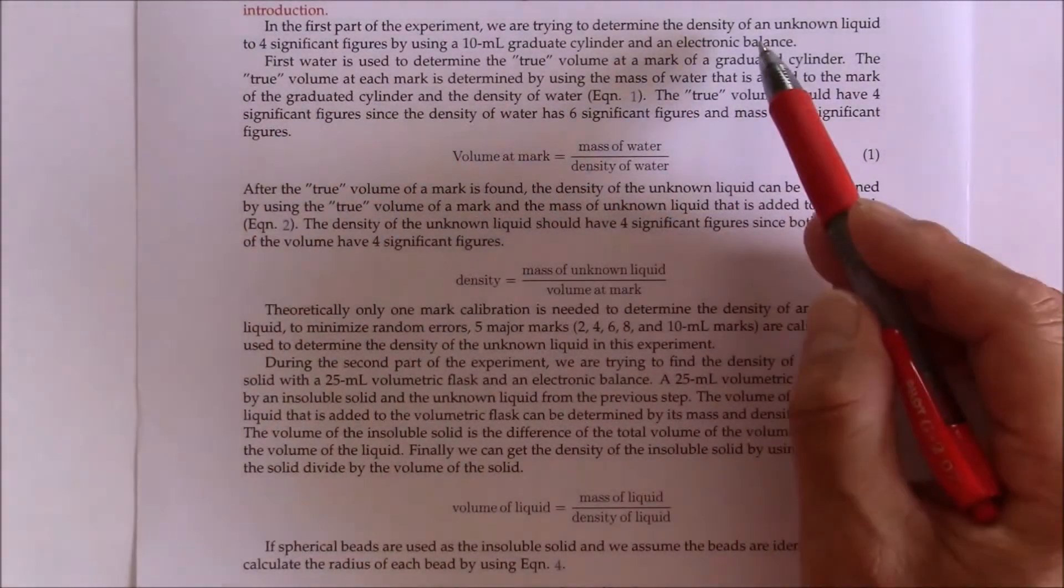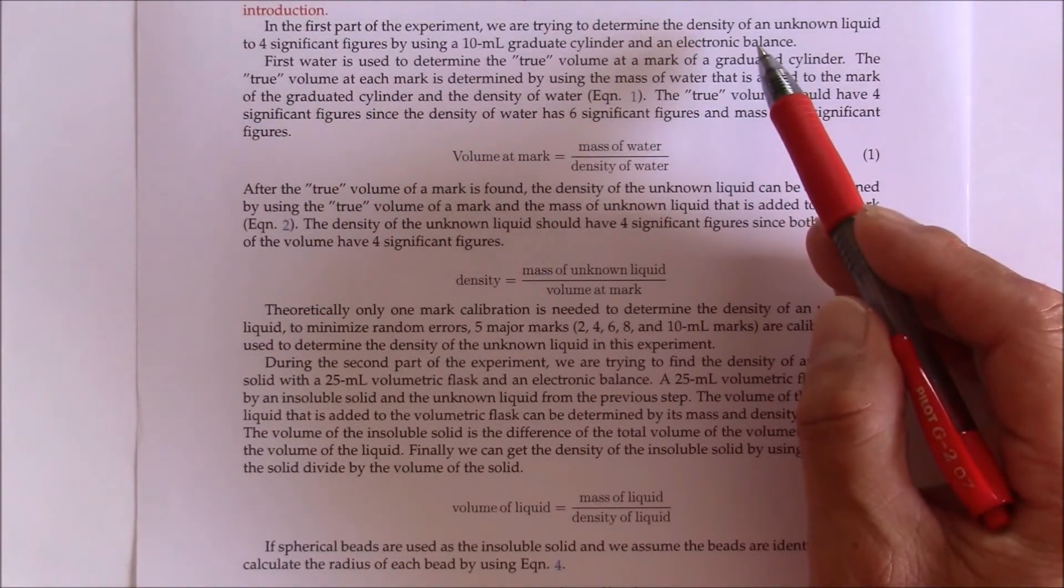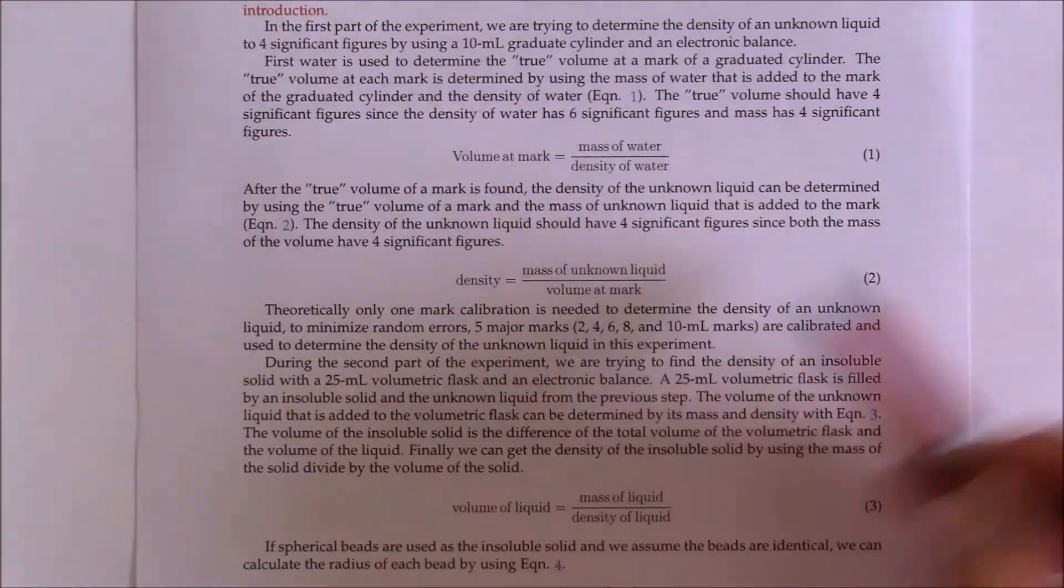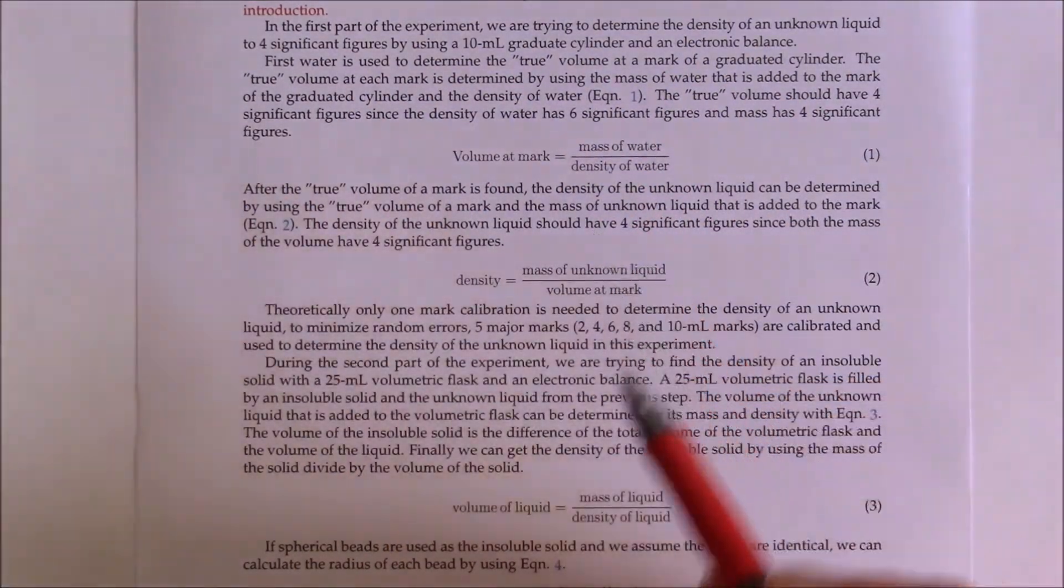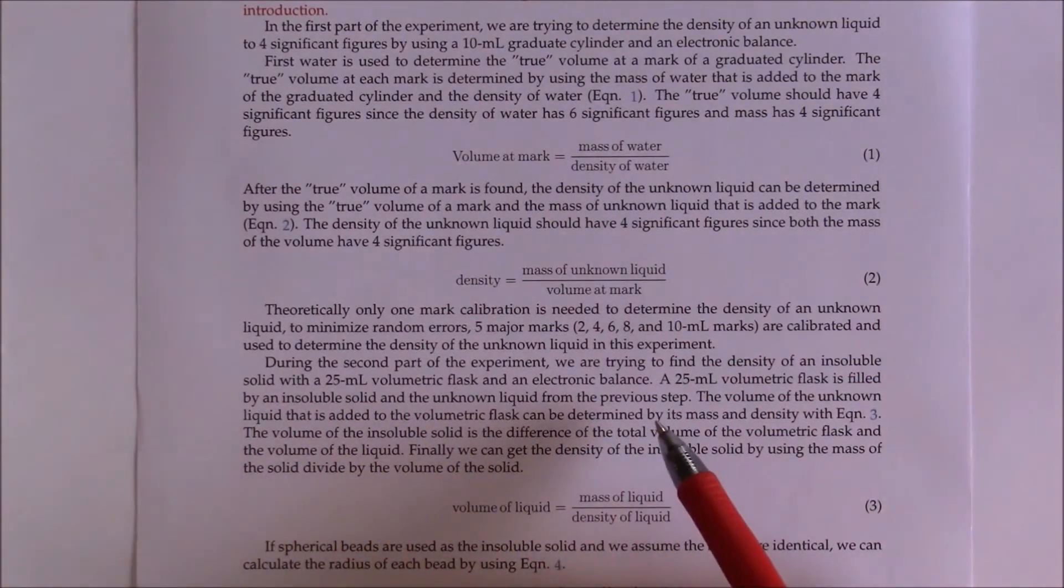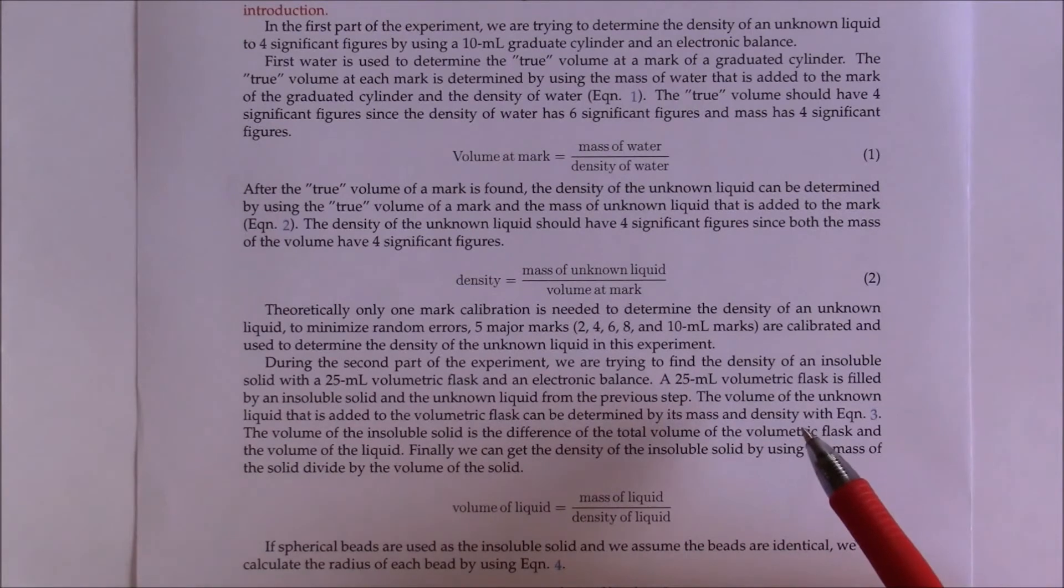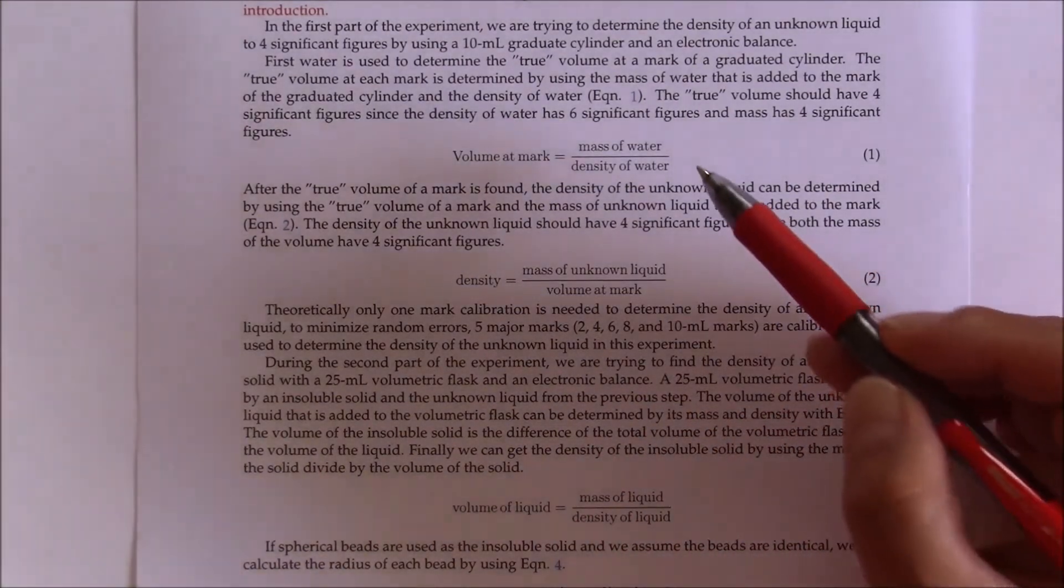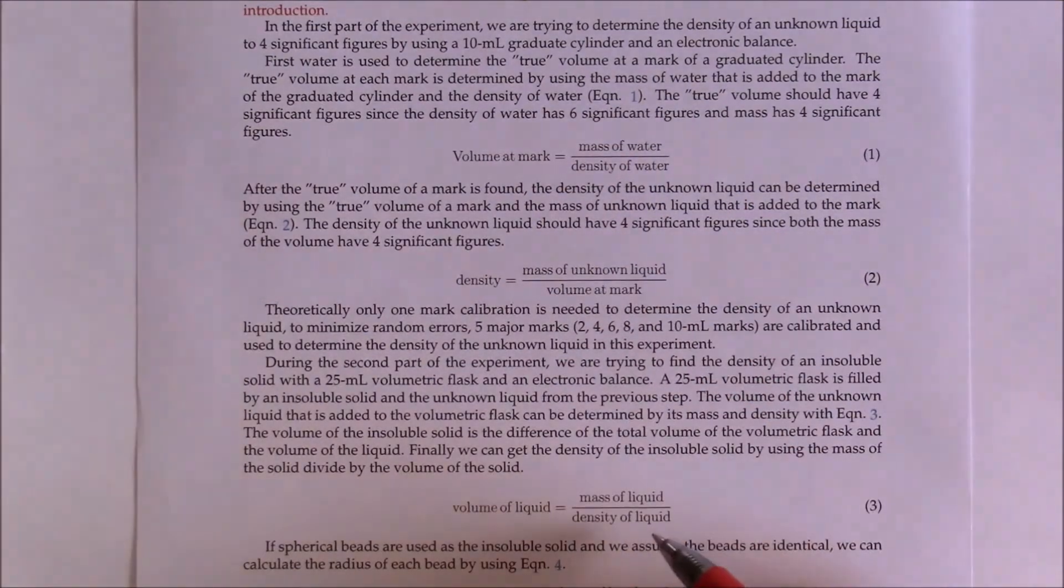At the very beginning, it states the purpose of the experiment for part 1. Then, explain the principle of part 1. And it states the purpose of the second part of the experiment. Then, explain the principle of the second part of the experiment. It also includes the necessary equations for our calculations after the experiment.